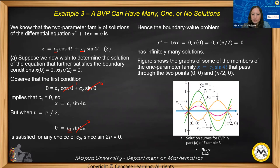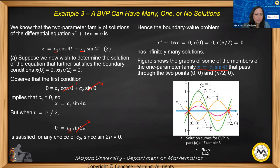Figure 4.1.2 shows graphs of some members of the one-parameter family x = c_2 sin(4t) that pass through the points (0, 0) and (π/2, 0). There are several solution curves passing through these two points, indicating infinitely many solutions.